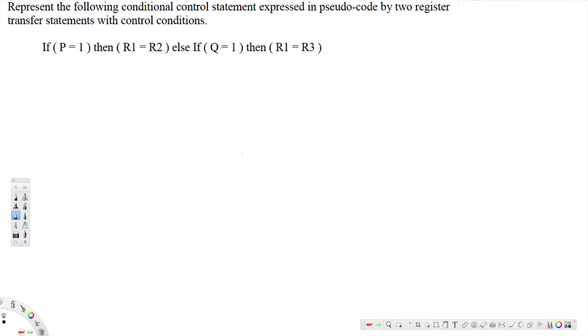Else if Q is equal to 1, then R1 is equal to R3. Now the answer here is P · R1 = R2, and then P' Q is R1 = R3. Now let's look at the explanation here. I put it as a note, I'm also putting it in the description so you can see it clearly.